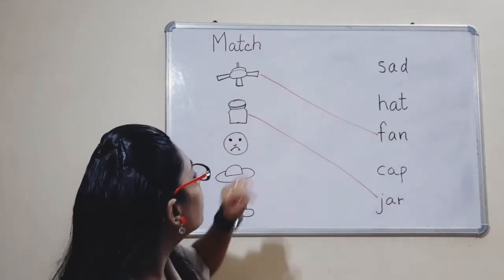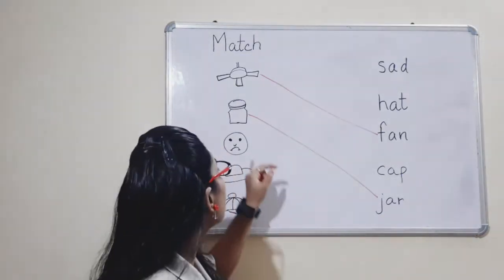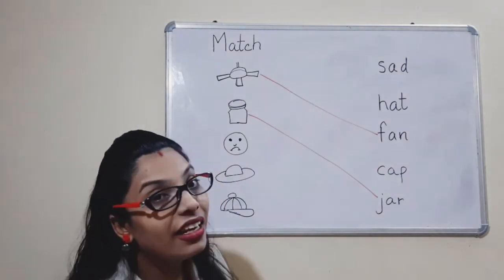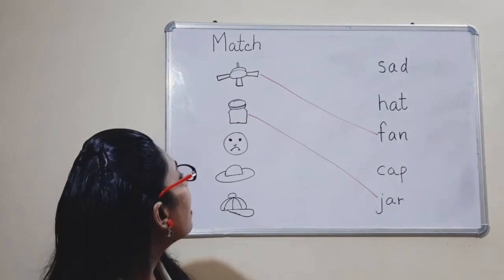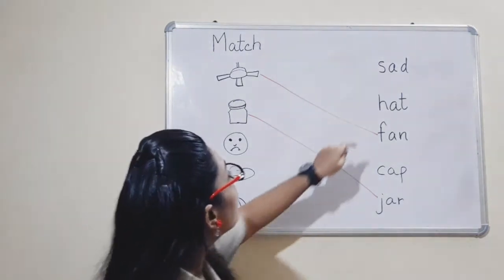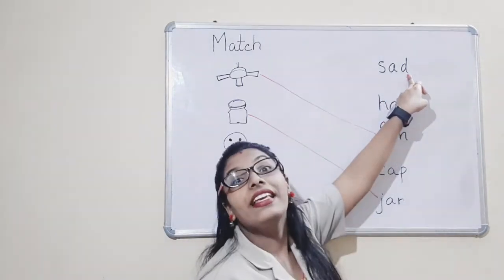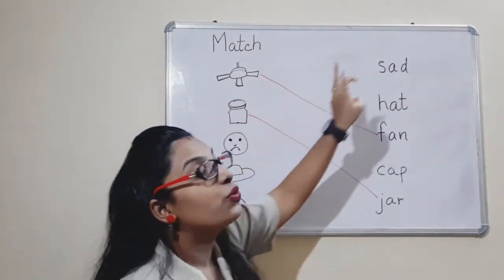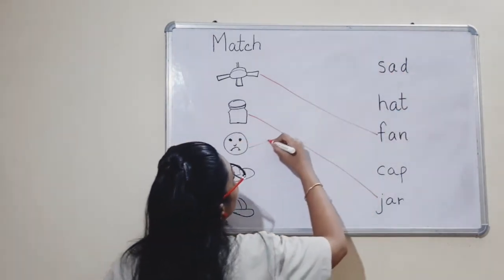Now, what's the third picture? Sad. Sad. Okay, what is the spelling of sad? S-A-D — sad. Sound S-A-D, sad. So we'll search. Is this S-A-D, sad? Yes. So we'll match this picture to the spelling. Match it.